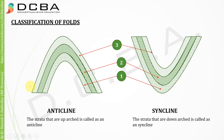For classification, we have two types: first is anticline, second is syncline. Strata that are arched upwards are called an anticline, while strata that are arched downwards are called a syncline. This is a simple classification.